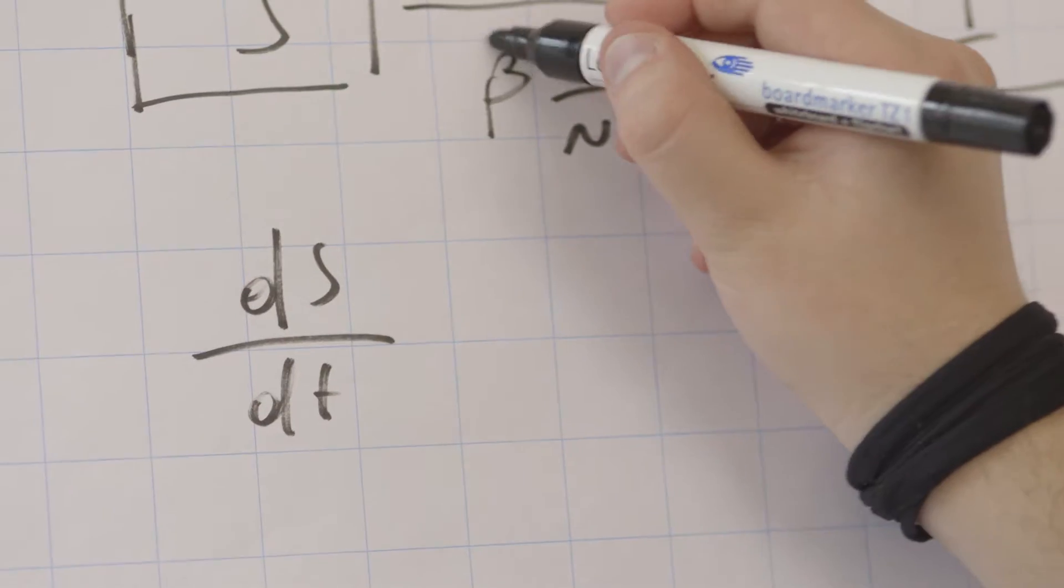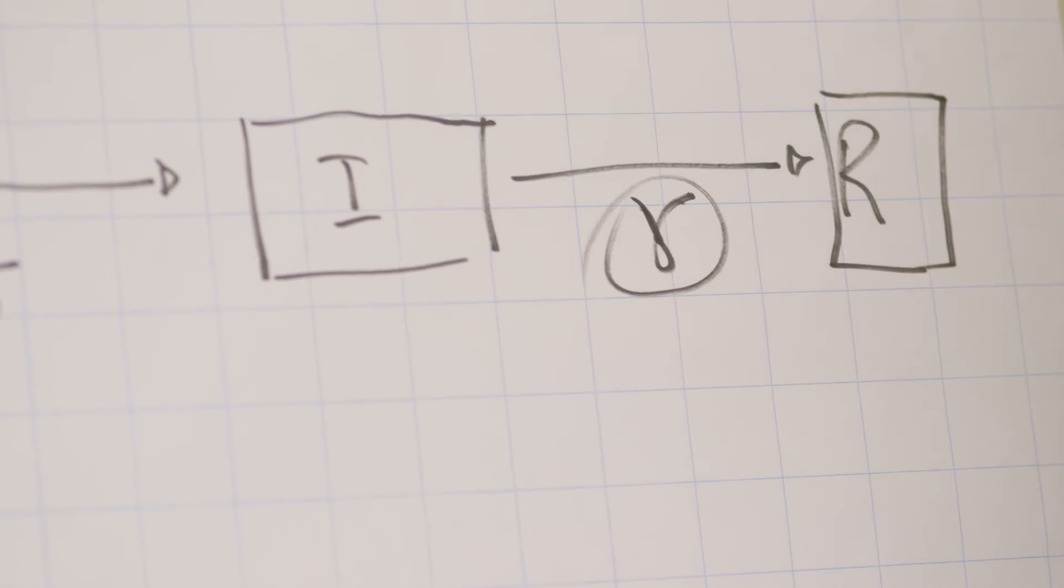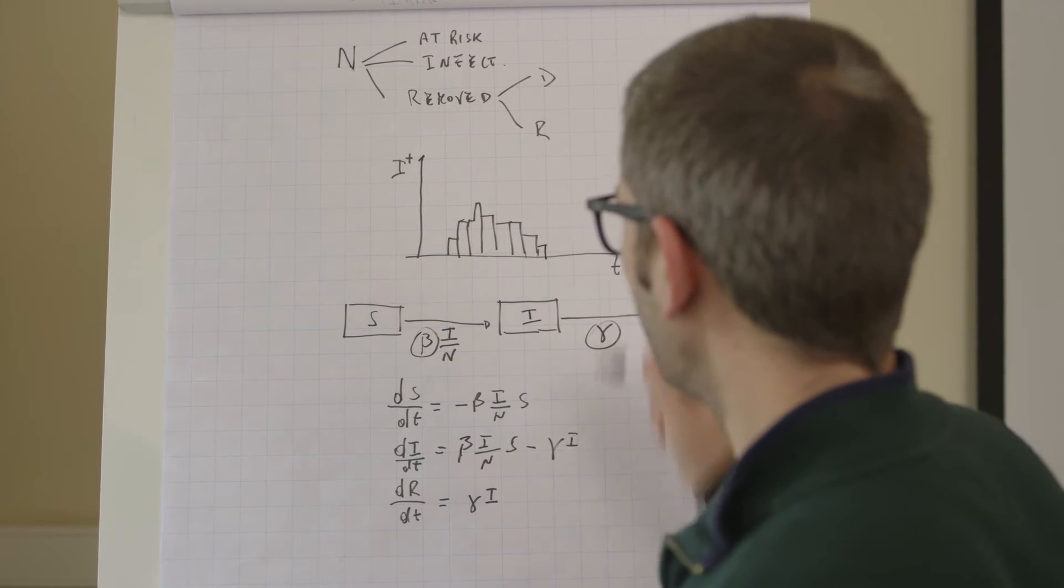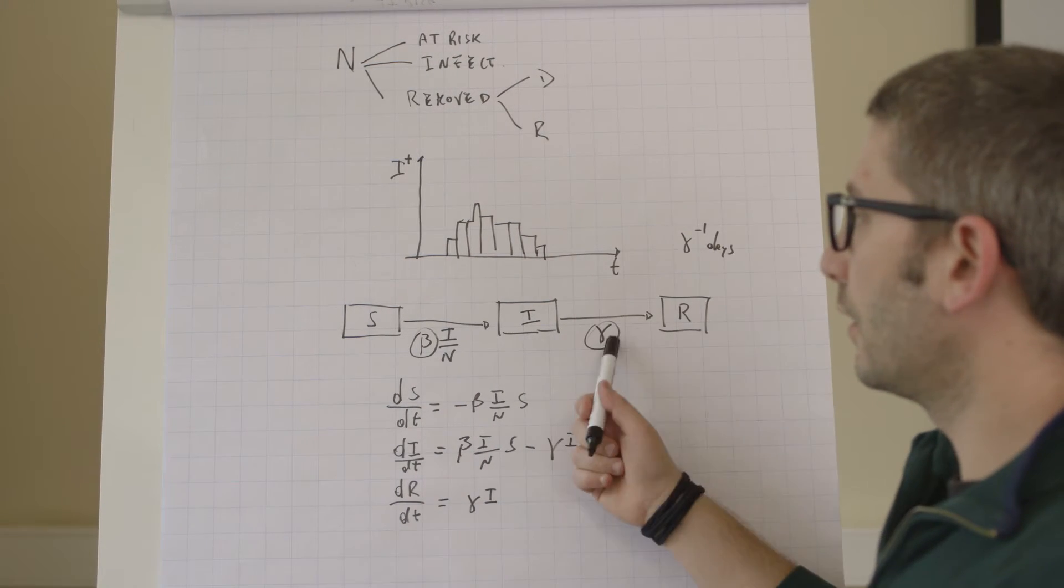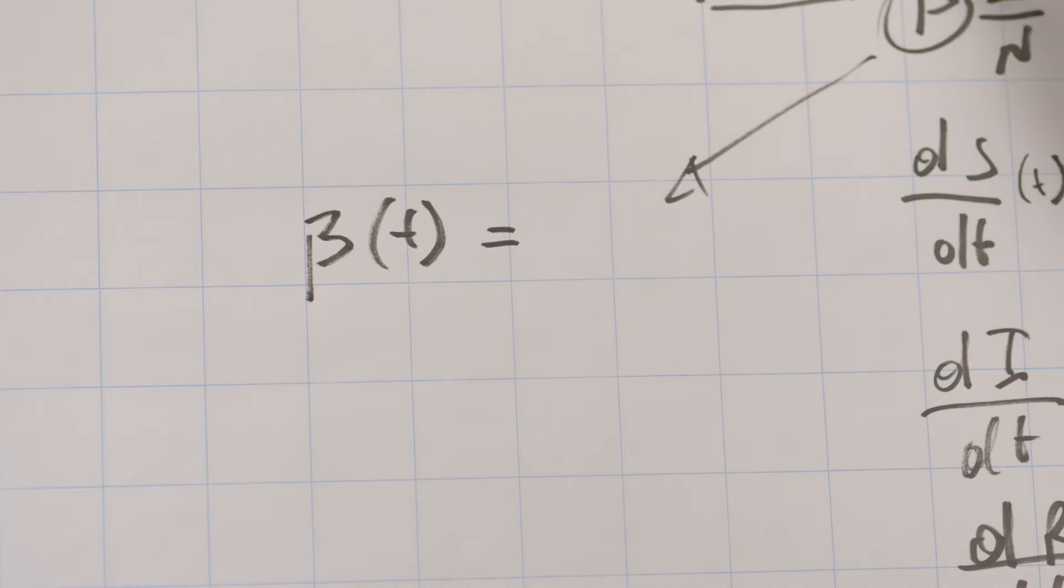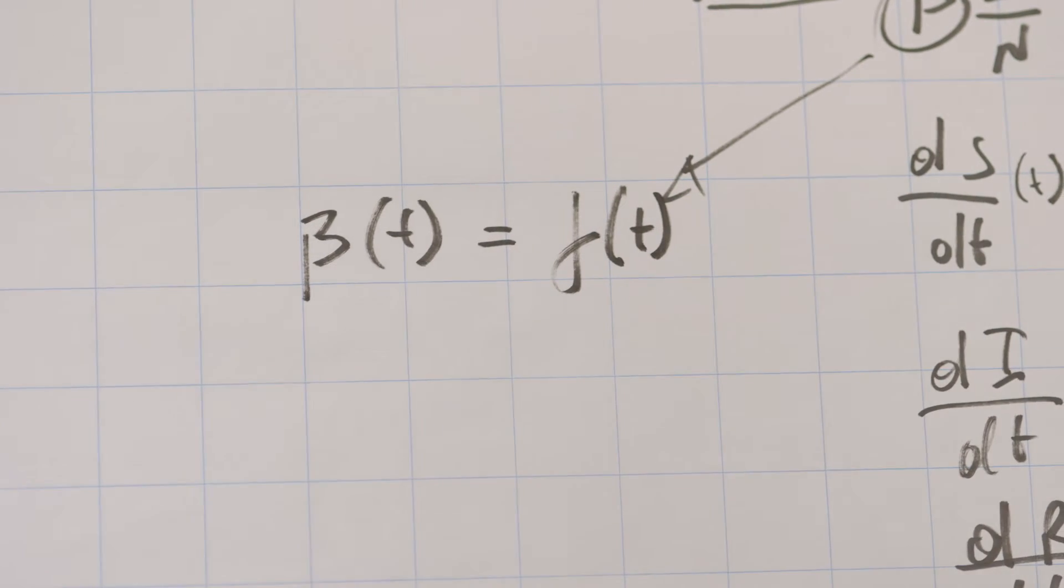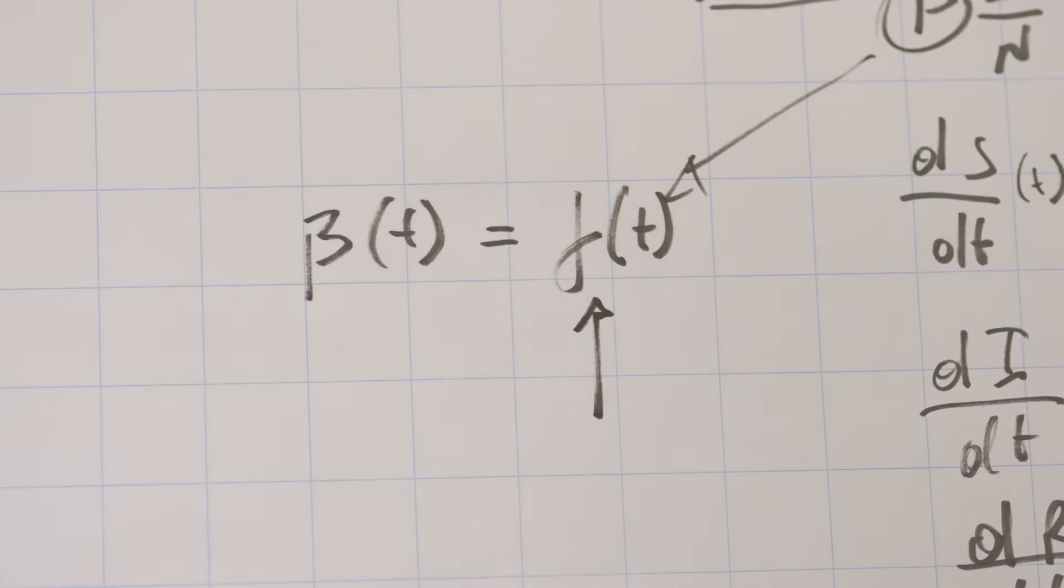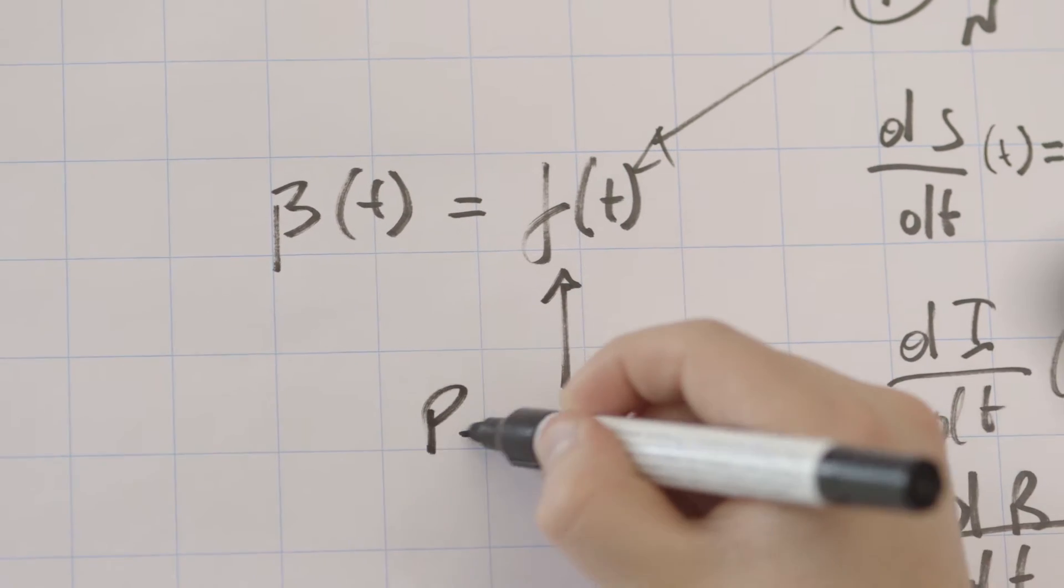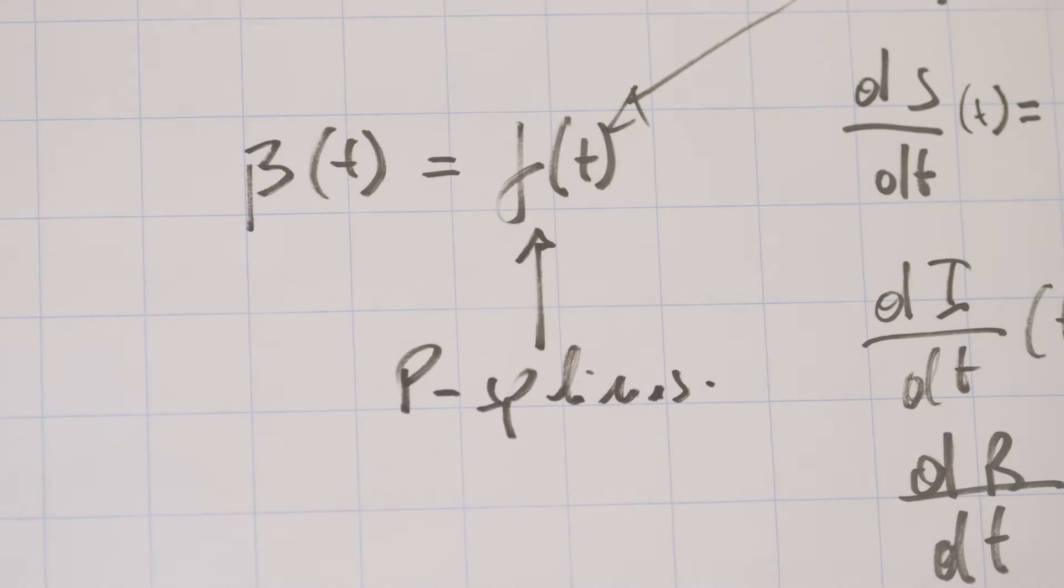We want to estimate basically these two rates, the contact rate and the removing rate. We do it in a Bayesian framework that allows us to combine prior information on those parameters. In particular, what we do is consider that beta is time-dependent and this is an unknown function of time and this function is estimated in a semi-parametric way using splines.